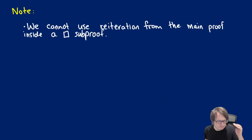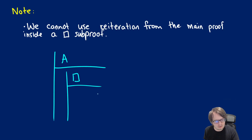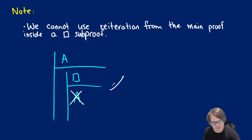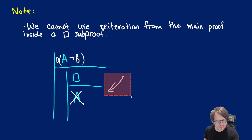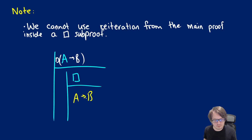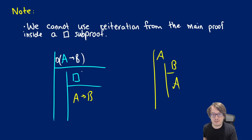An important note about reiteration: imagine we start a proof with just A and ask what happens in all necessary worlds. We don't know if A is true in every world, so we cannot take A inside our box sub-proof. The only things that can go inside a box sub-proof are formulas with a box in front of them. So if we had box(A arrow B), we can take A arrow B and put it into the sub-proof. Reiteration works in other contexts — if you have A and assume B, putting A back in is fine — but it's a different situation with box proofs.